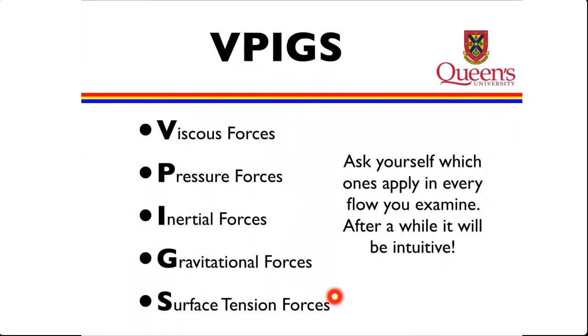If we take each of these individually, we'll understand the flow. And if we look at them in comparison to one another, we'll be able to tell which ones are important. If the viscous forces are small compared to the inertial forces, then we can probably get away with neglecting friction. If the gravitational forces are large compared to the inertial forces, then we'd better account for that gravitational effect, likewise surface tension.